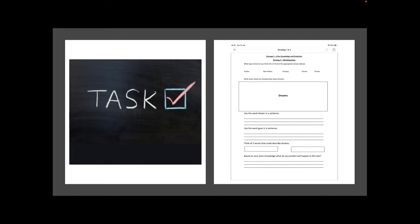Then it asks you to write down what you already know about dreams in a little mind map. Use the word dream in a sentence. Use the word gave in a sentence. Write down two words that you could use to describe dreams. And then based on your prior knowledge, what do you predict will happen in this text?